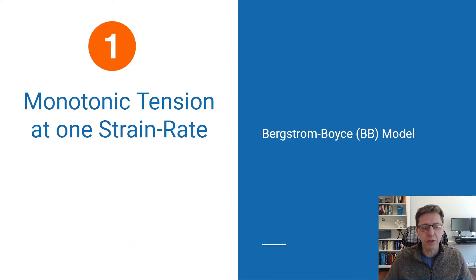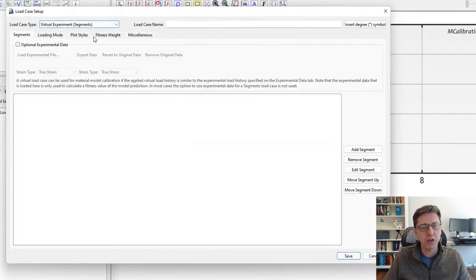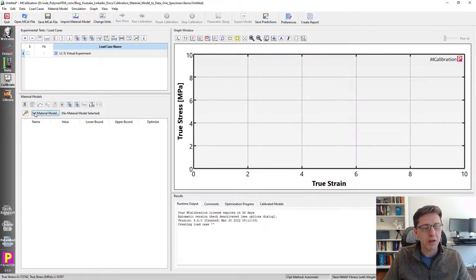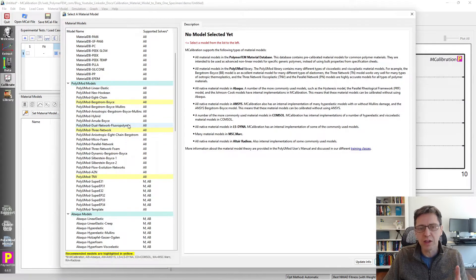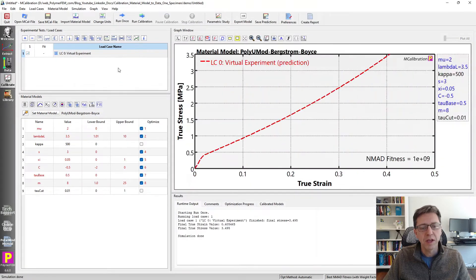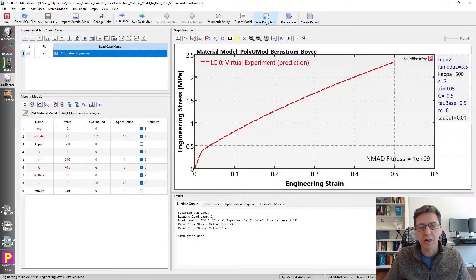The first case is monotonic tension at a single strain rate, and I will demo this example live using the MCalibration software. In this example, I'm going to first generate the experimental data using a virtual load case. I'm opening a load case here and switching to virtual. I'm going to do the default setting, engineering strain rate of 0.01 until the engineering strain is 0.5. I'm going to then select the material model that I'll use as the true answer in this example, the PolyUMod BB model. Here is the predicted stress-strain response from this model, and I will use this as input for my calibration. To do that, I will export this data here, save prediction.